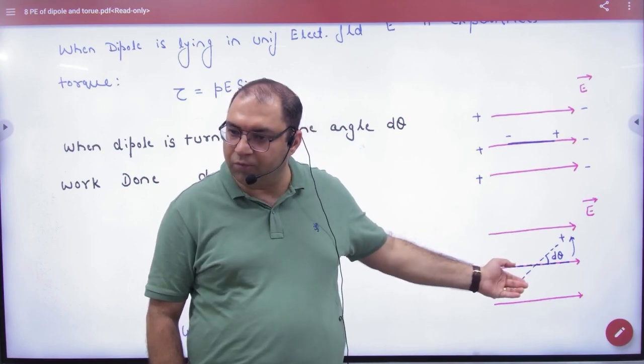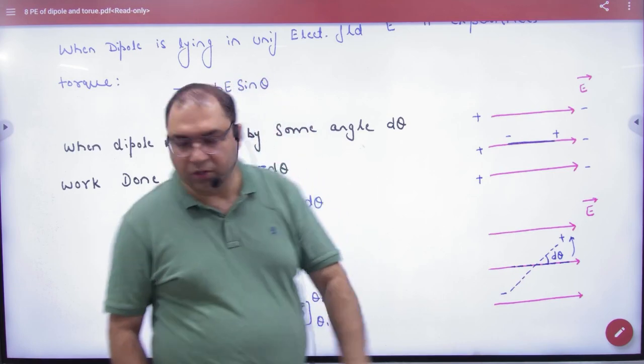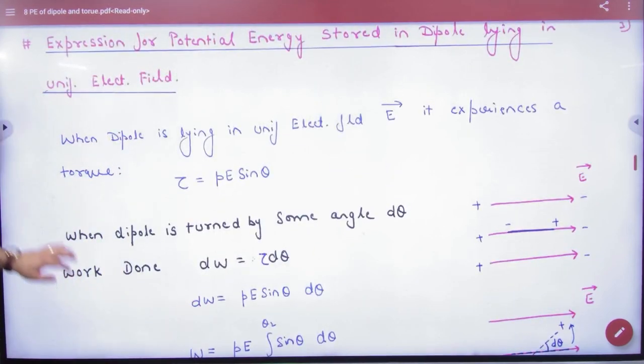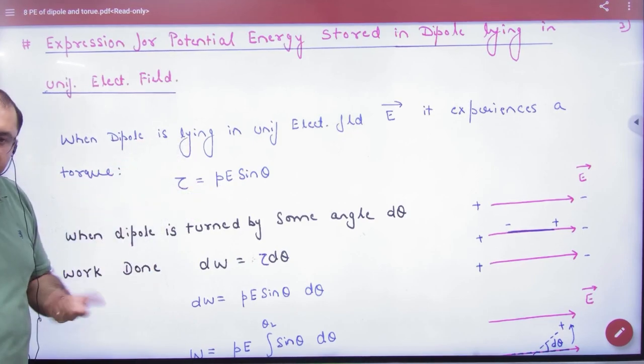So if I take it out of work done, that's the potential energy equal to work done. So for work done, let's do this. When dipole is lying in uniform electric field E, torque experience what will be? P E sin theta.